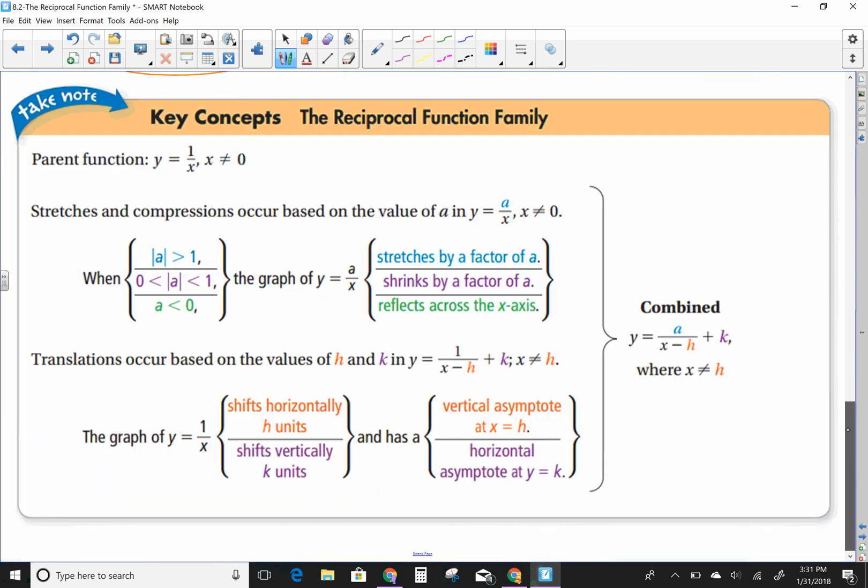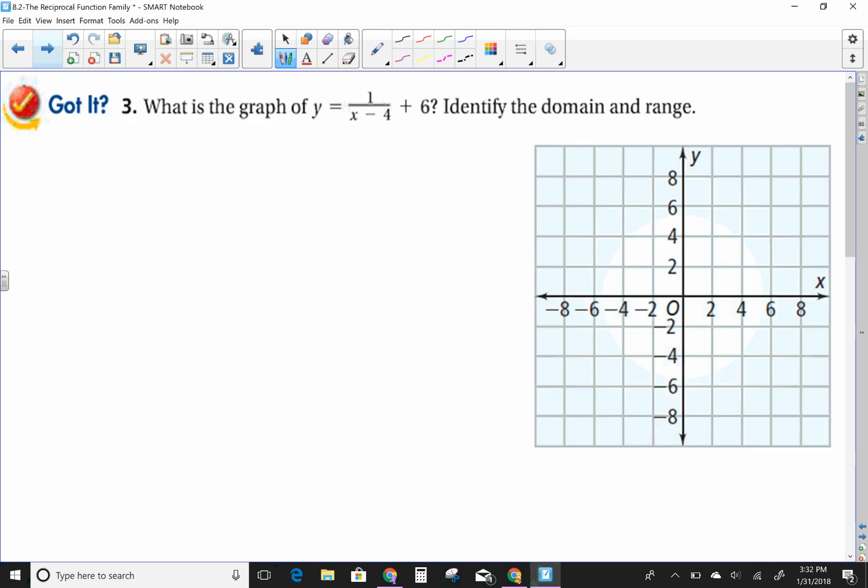Down here, it talks about what we have done before. So if you want to pause and look at it longer, but we know, because we've done this so much this year, that a, which would be on top of our graph here, is going to stretch our graph. If it's negative, of course, it reflects. The h shifts it horizontally, and the k shifts it vertically. But let's go do a problem, and you're going to see how easy this is.